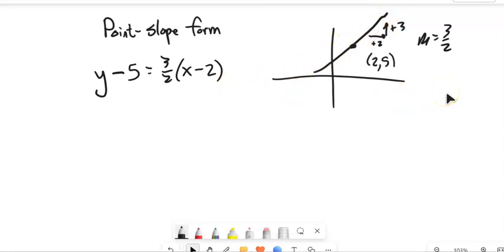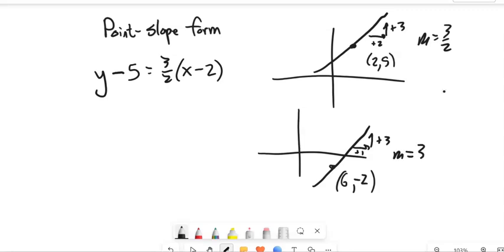And just to do another example like that, let's say this is the point (6, -2). And this has a slope, let's just have it go over 1, up 3. So we know that our slope is change in y over change in x is 3.